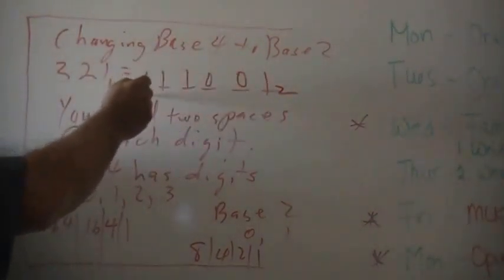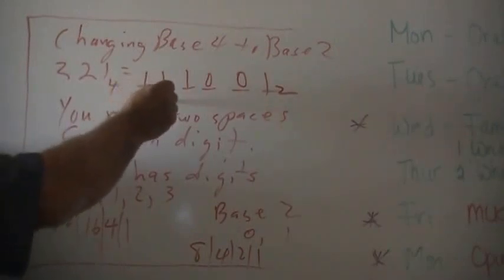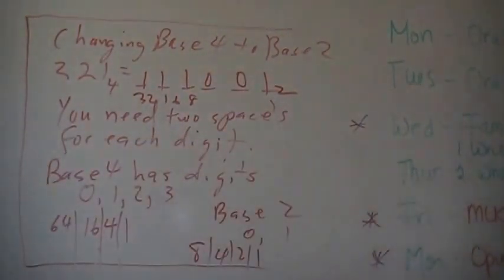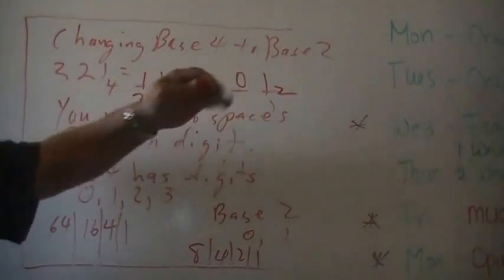1s, 2s, 4s, 8s, 16, 32. So that's 32 plus 16 plus 8 plus 1. 48, 56, 57.